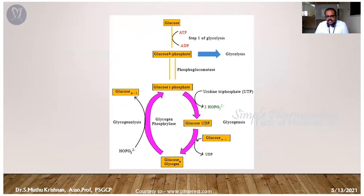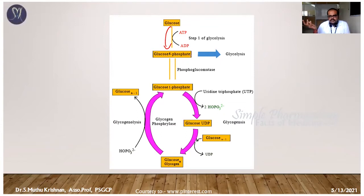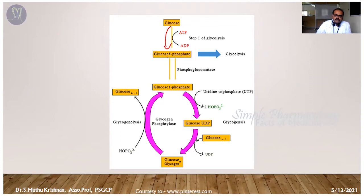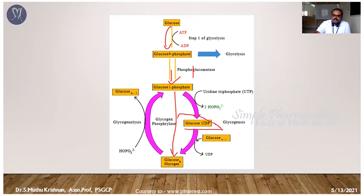In this diagrammatical representation, when the body has excess glucose, it is converted into glucose-6-phosphate, which can enter the glycolysis cycle to form pyruvate and lactate, or enter the HMP pathway. Alternatively, glucose-6-phosphate is converted into glucose-1-phosphate by phosphoglucomutase enzyme, then into UDP-glucose, and with a primer forms glycogen — this is glycogenesis.